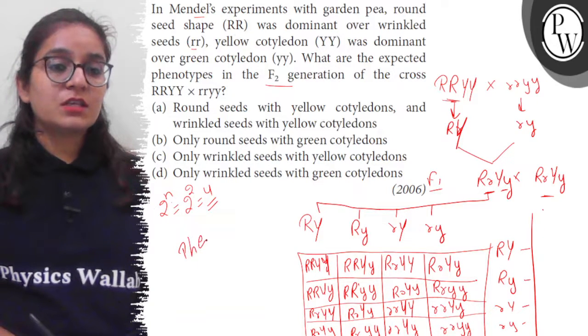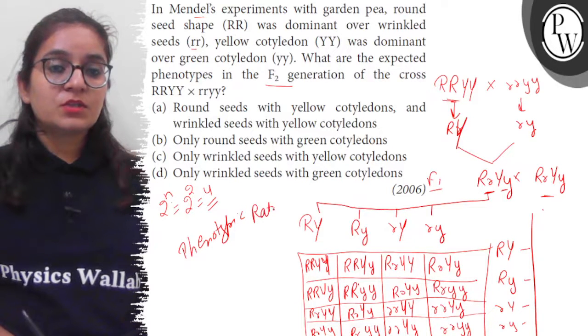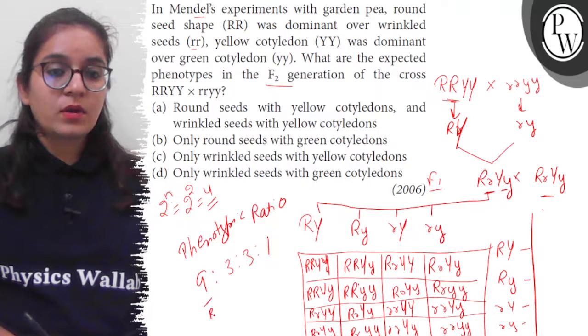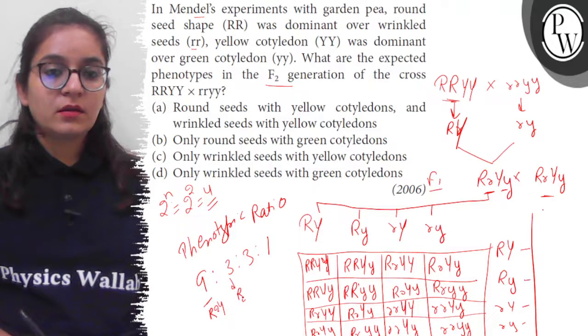So F2 generation when we make phenotypic ratio, the phenotypic ratio comes out to be 9:3:3:1, where 9 is round and yellow, 3 is round and green, this 3 is wrinkled and yellow, and this one is wrinkled and green. Now let's see the options.